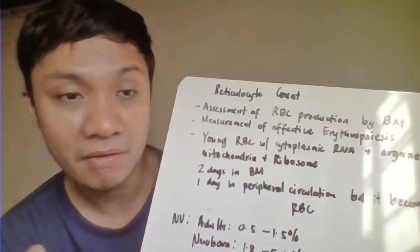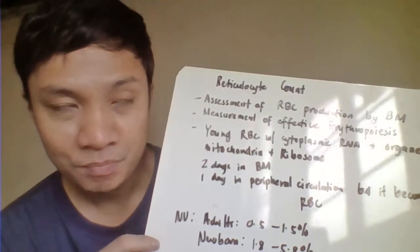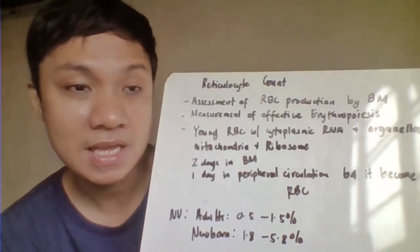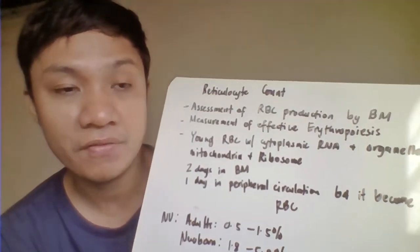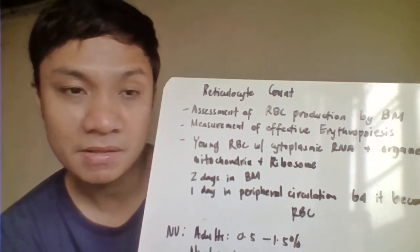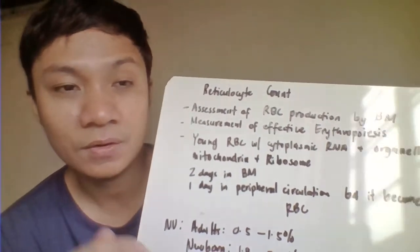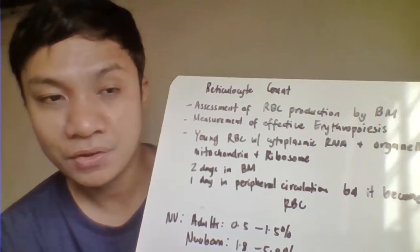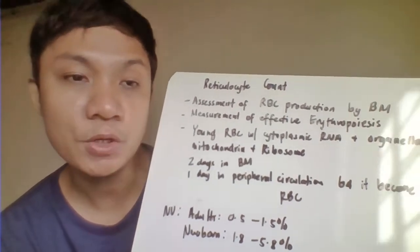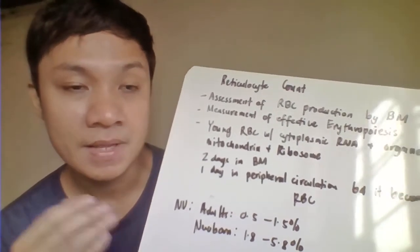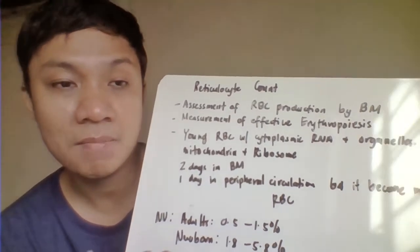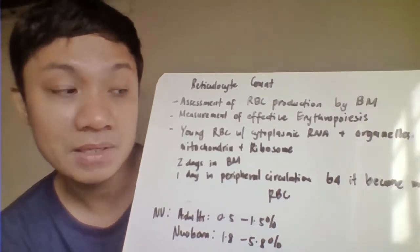Reticulocyte count will always be associated with hemolytic reaction or bleeding manifestations. It will also be increased in patients with bleeding, such as menstruation among female patients. As a replacement for lost RBCs, the bone marrow produces new RBCs, and you would expect a high reticulocyte count in those having menstruation.